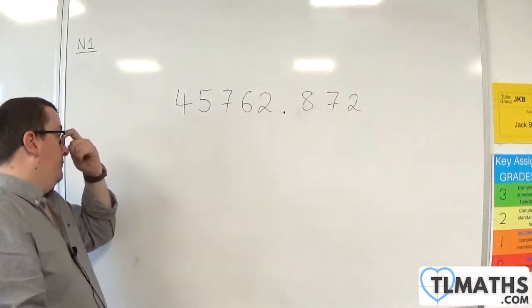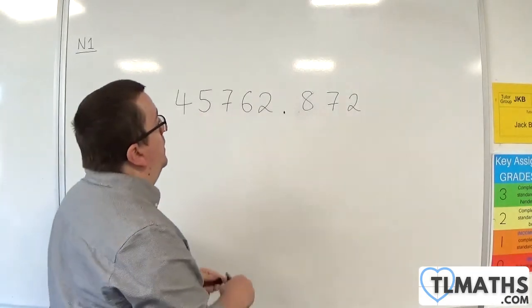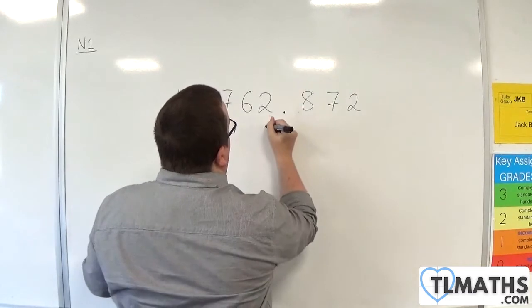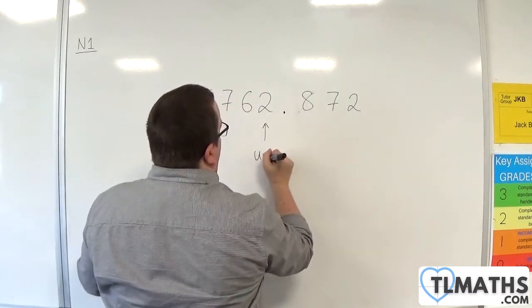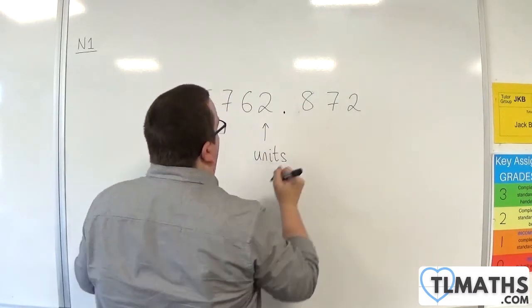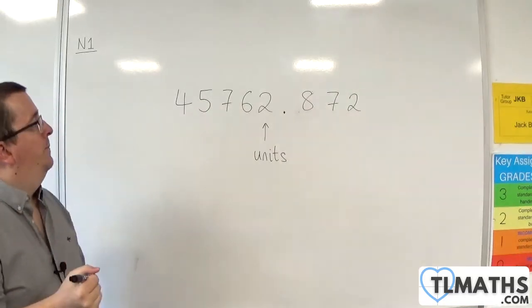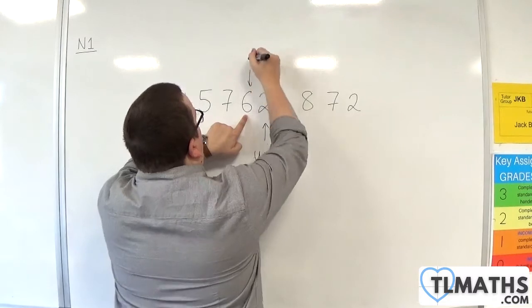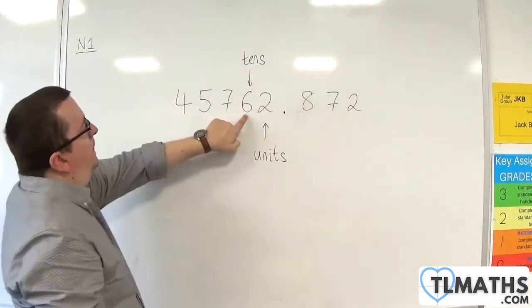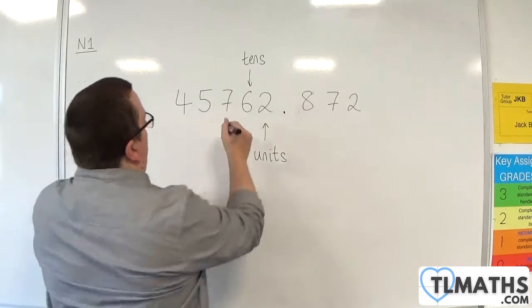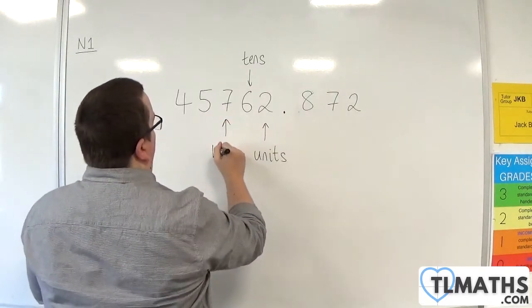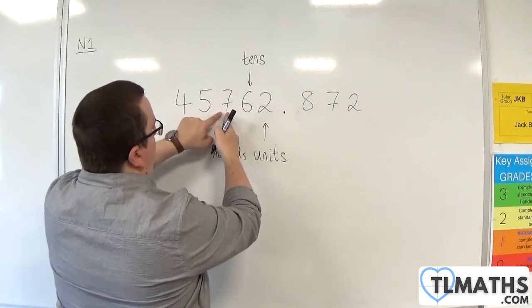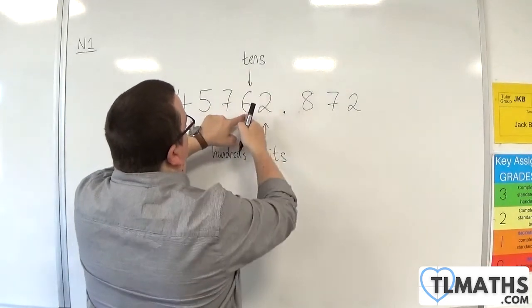So that's how we would read it. This placement here, we refer to that as the units column, and so we have two units. Then we have six, which is in the tens column, then seven in the hundreds. Hence, you have 762.